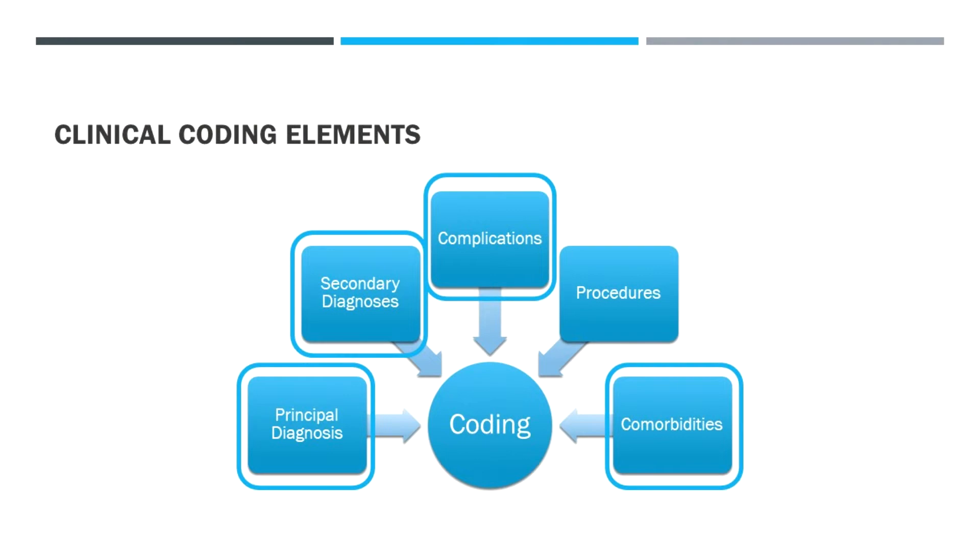Hey, it's Andrew here. In this session we'll be talking about coding and documentation related to common renal disorders as well as urological disorders. Just as a reminder, we have a principal diagnosis that informs an acute admission, along with secondary diagnoses and complications that add complexity. That complexity informs clinical benchmarking, performance audits, and activity-based funding, which is what we're focusing on today.